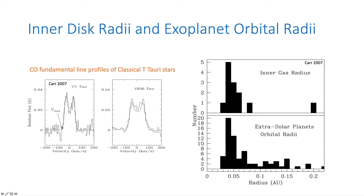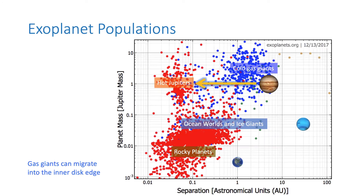That distribution looks kind of similar to what we find for the orbital radii of extrasolar planets. The reason for that might be quite reasonable — planets may form at very large radii, couple to their disks, and migrate inward until they come to the end of the disk and then stop. In that way, the structure of protoplanetary disks can imprint itself on the architectures of extrasolar planets.